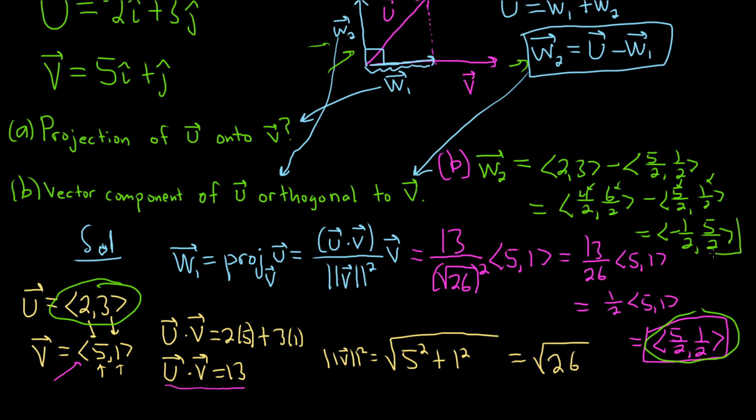And so this should be the vector component of u orthogonal to v. Everything looks okay. So that's it. Basically you just use these formulas. Use this one for the projection and then you use this one to find the vector component of u orthogonal to v. I hope this video has been helpful to anyone working on this type of stuff. Good luck.